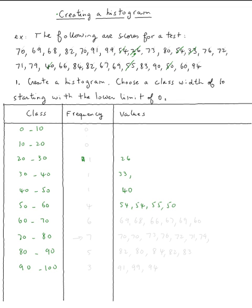Now what about 60 to 70? It means in the 60s. 60s, we have 1, 2, so 69, 68, and then we have 66, 67, 69, and 60.